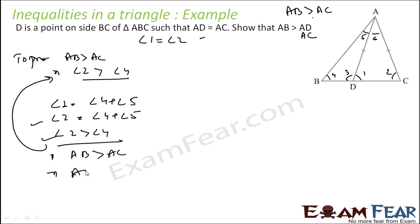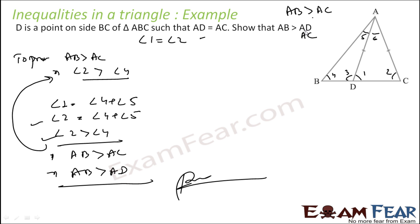We did reverse engineering: AB greater than AD, and AD equals AC, so AB greater than AC. To prove angle 2 greater than angle 4, we used angle 1 equals angle 2 and angle 1 equals angle 4 plus 5, giving angle 2 equals angle 4 plus 5, hence angle 2 greater than angle 4.